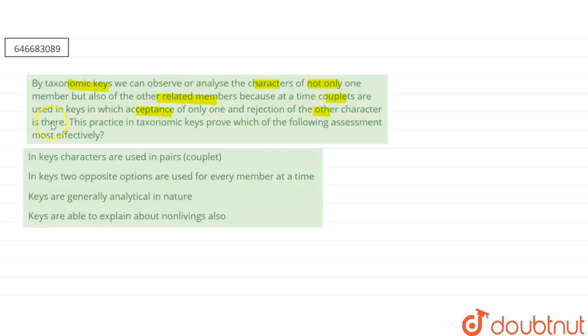The practice in taxonomic keys prove which of the following assessment most effectively? First is: in keys, characters are used in pairs or couplets. Second is: in keys two opposite options are used for every member at a time. Third is: keys are generally analytical in nature. And fourth is: keys are able to explain about the non-livings also.